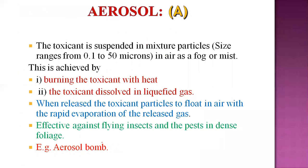Aerosols: the toxicant is suspended in particles with size ranging from 0.1 to 50 microns in air, acting as a fog or mist. This formulation achieves its action in two ways: first, by burning the toxicant with heat; second, by dissolving the toxicant in liquefied gas to form a fog or mist in air. When released, toxicant particles float in the air with rapid evaporation of the gas, killing pests. Effective against flying insects and pests in dense foliage. Example: aerosol bomb.